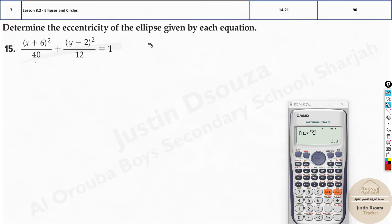Same way you can do these problems by yourselves. Now what is the a value? Bigger value is a. So a squared is 40. B squared is 12. A is equal to root 40. B is equal to root 12.